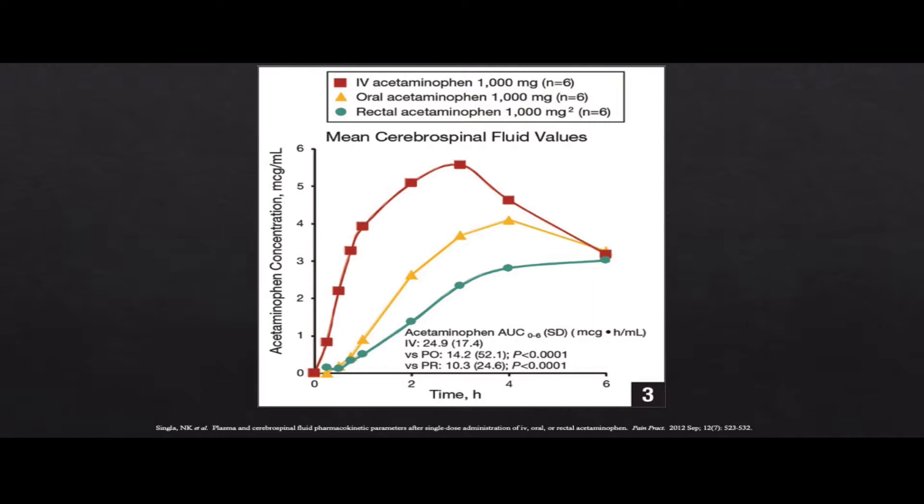This chart shows CSF levels over time: red is IV acetaminophen (Ofirmev), yellow is oral. Rectal absorption is erratic and slow. Ofirmev works fast — CSF levels spike quickly, which is why it has the impression of working better. But at the four-hour mark, oral is starting to catch up. Oral is about 10 cents a dose; Ofirmev is $40. If patients take it at home four hours before, the cost to the facility is zero.